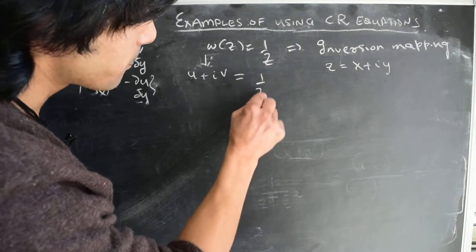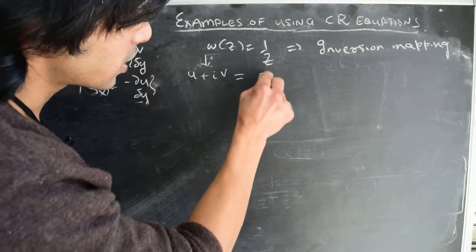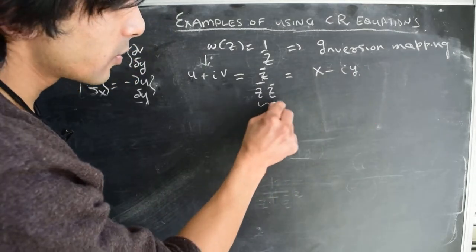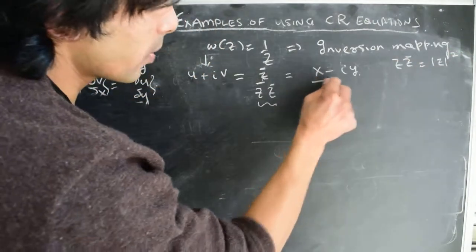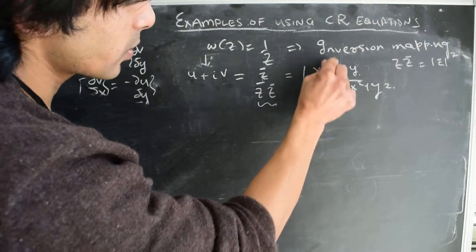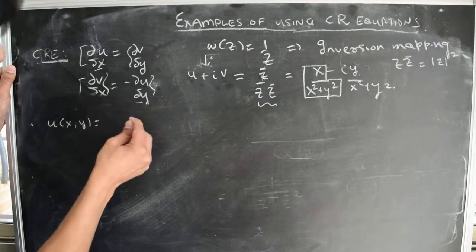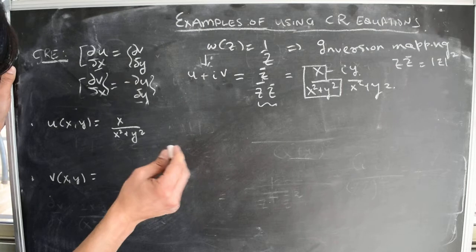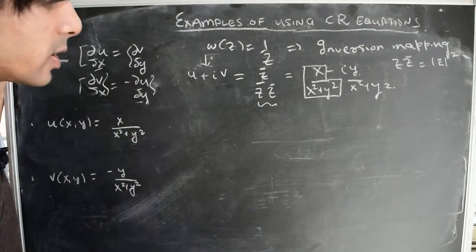For W = 1/Z, one way to extract U and V is to multiply and divide by the conjugate Z-bar. Given Z = X + iY, Z-bar = X - iY, and Z times Z-bar equals the modulus of Z squared, which is X² + Y². This gives us U = X/(X² + Y²) and V = -Y/(X² + Y²).